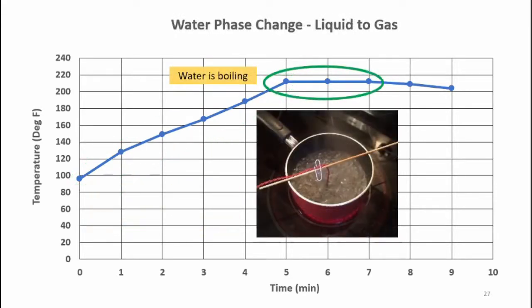Once the water reached 212 degrees Fahrenheit, the entire pan was vigorously boiling. But notice how the temperature remains constant, never rising above the boiling temperature.